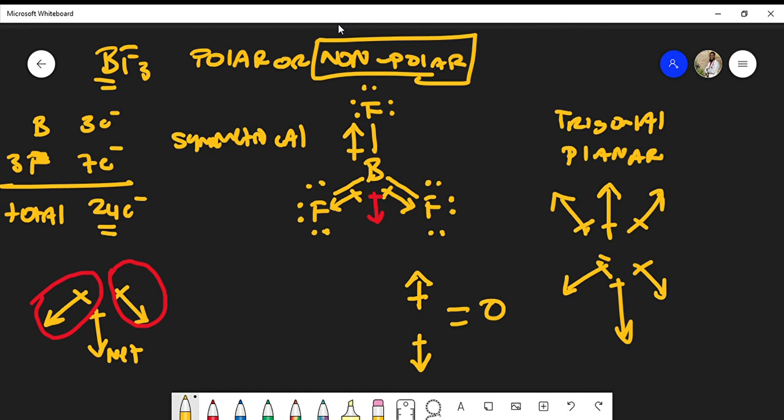Now you don't really appreciate this non-polarity if you actually draw the molecule in 2D. So what do I mean? If you draw the molecule like this then you don't get to actually appreciate the fact that the molecule is non-polar. And so this is the reason why boron trifluoride is non-polar.